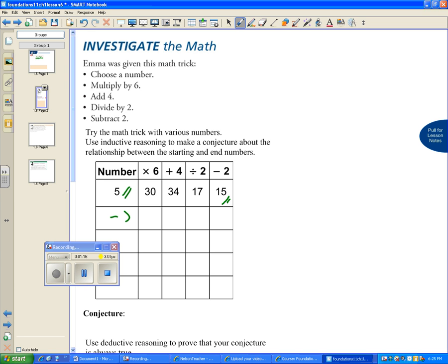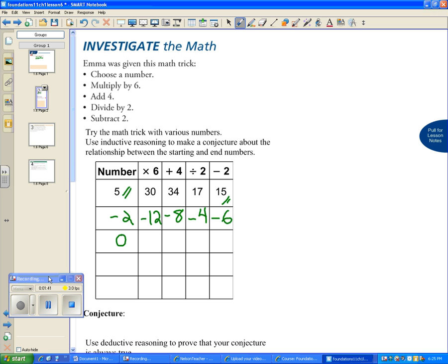Let's try the number negative 2. Negative 2 times 6 is negative 12, plus 4 is negative 8, divided by 2 is negative 4, minus 2 is negative 6. Next number, let's try 0. 0 times 6 is 0, plus 4 is 4, divided by 2 is 2, minus 2 is 0. Let's try the number 10. 10 times 6 is 60, plus 4 is 64, 64 divided by 2 is 32, and 32 minus 2 is 30.